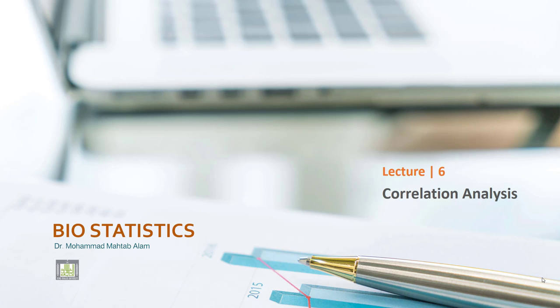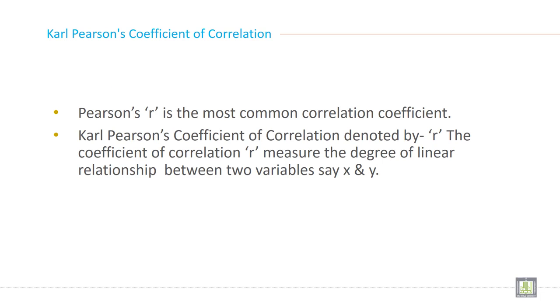Bismillah ar-Rahman ar-Rahim. I am Dr. Muhammad Mehta Balam and I am going to discuss the Carl Pearson coefficient of correlation. What is the Carl Pearson coefficient of correlation, or who is Carl Pearson? He was a person who first invented the relationship between two or more variables. That's why it is called Carl Pearson correlation. He has given the techniques, he has invented the methods to calculate the relationship between two or more variables. That's why it is called Carl Pearson correlation.